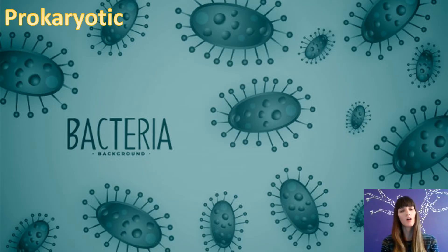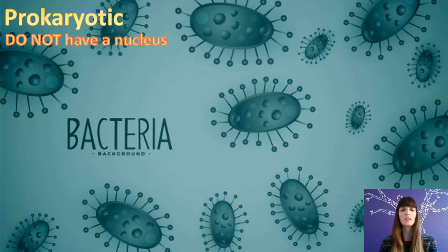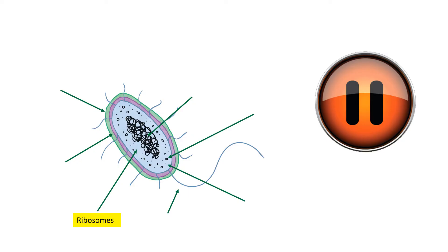The next type of cell is the complete opposite to our eukaryotic animal and plant cells. It's a bacteria cell, and bacteria are what we call a prokaryotic cell. Prokaryotic means that they do not have a nucleus — you can remember it because pro rhymes with no. So I'd like you to pause the video again, draw this bacteria cell, and add as many labels as you know to it.